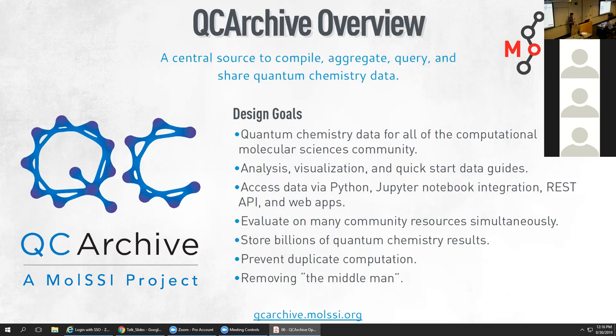Finally, there's the goal of removing the middleman — no more having a graduate student tell you to do computations, run it on a supercomputer, format everything, and try to give it back to you. Can we skip all that? Can we say at a very high level, go compute these things, and then have everyone in a single group or community able to access that data simultaneously?